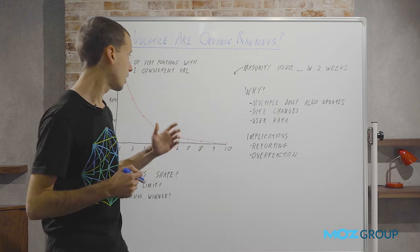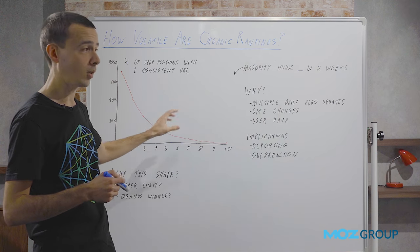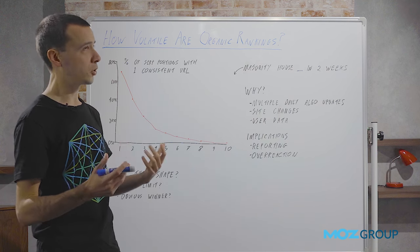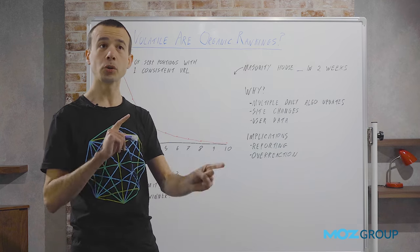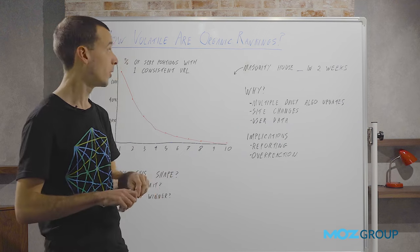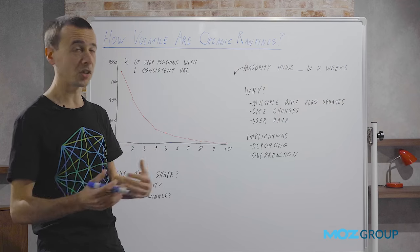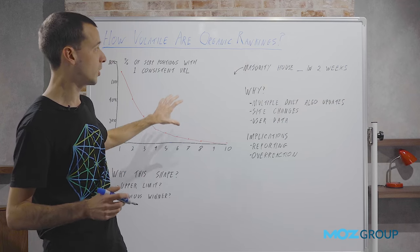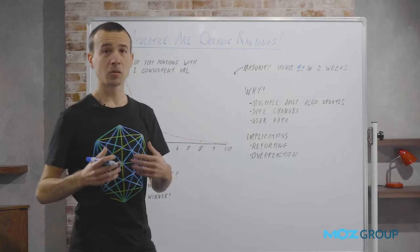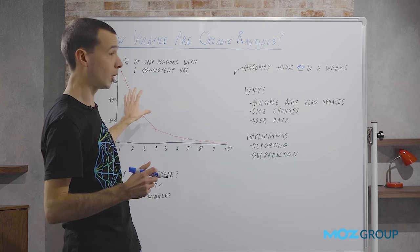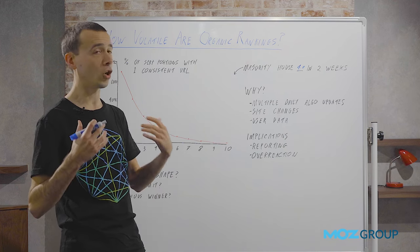This chart was looking at the percentage of positions which had one consistent URL, but I was also interested in: if they don't have one URL, how many is it? Is it two just swapping in and out all the time, or is it a larger number? Now it turns out that looking across all of these positions, all 40,000 SERPs, 14 days, and all these positions, the majority of positions actually housed four URLs or more, which is a staggeringly large number. So although there were some that were stable with just one URL, the ones that were fluctuating were fluctuating a lot over the course of this period.